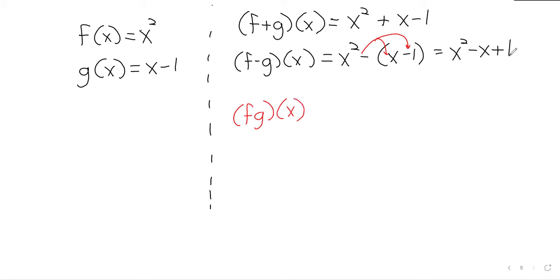We don't normally bother writing any kind of multiplication symbol when we're multiplying functions. We'll just say fg. You want to be a little careful here. We're multiplying the entirety of the first function by the entirety of the second function. If we multiply that out, x cubed minus x squared.